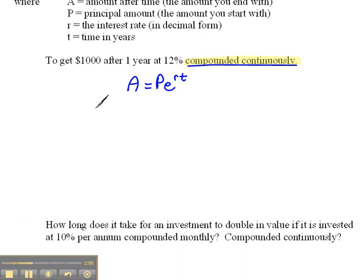Okay, so if we want to get $1,000, I'm going to go ahead and list out my variables over here to the side. If I want to get $1,000, that's my amount after time. After one year, well that's our time frame. At 12%, so that's our interest rate, but I have to write it in decimal form, so that would be 0.12.